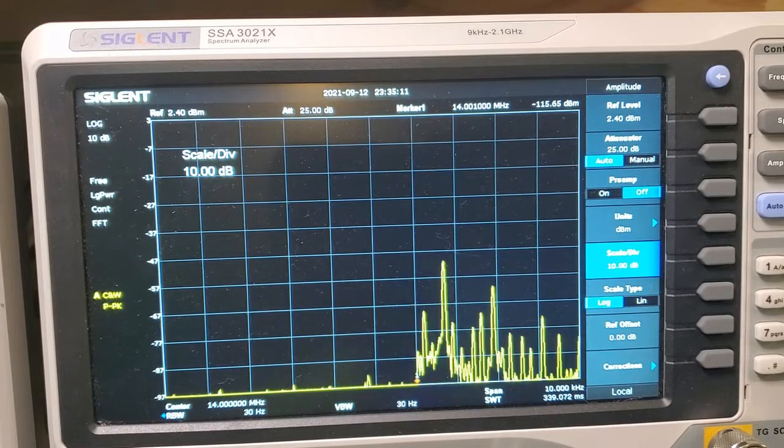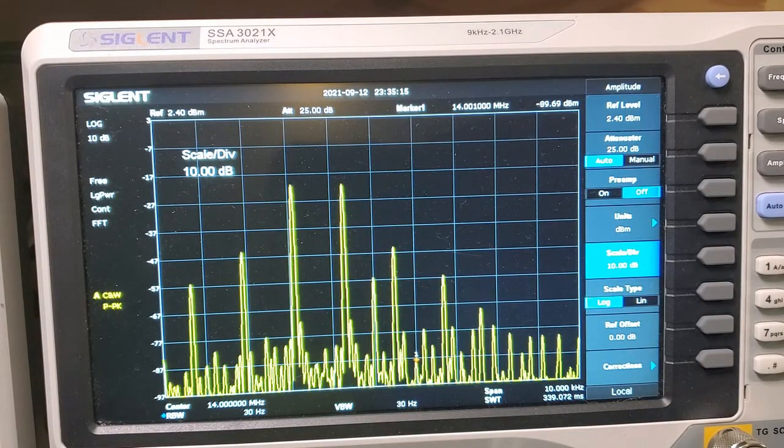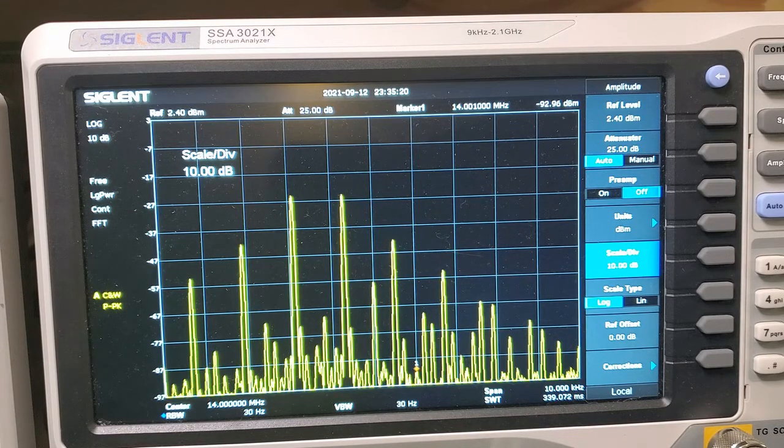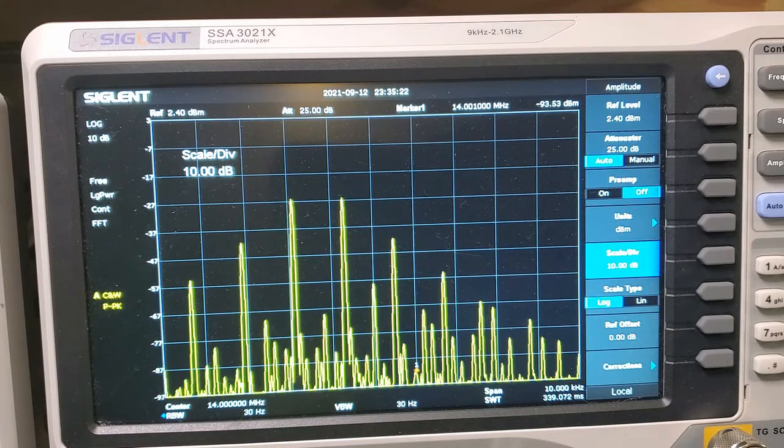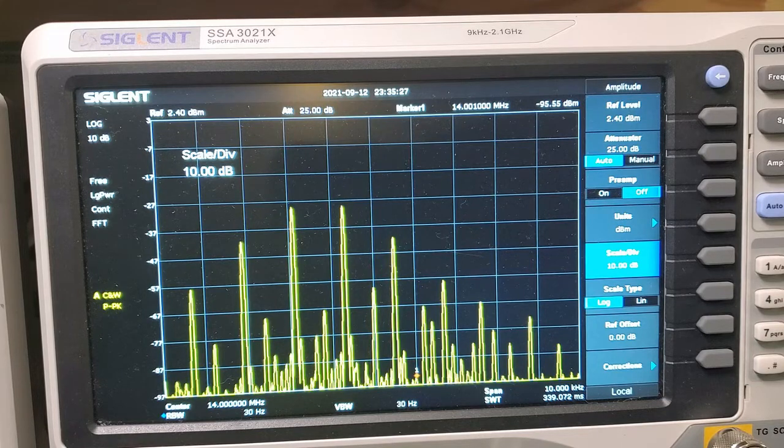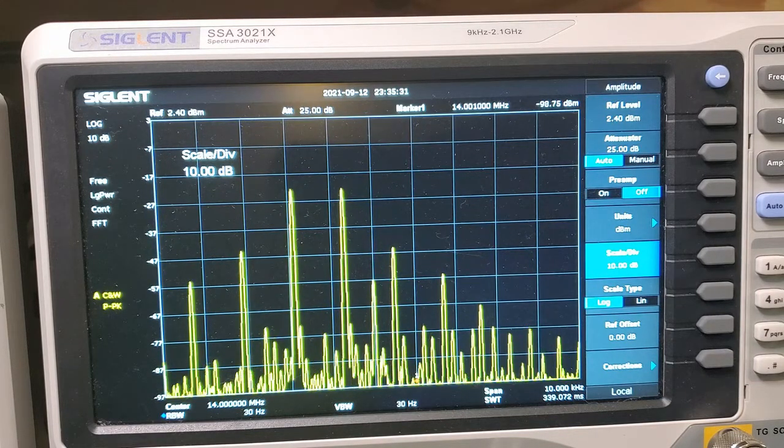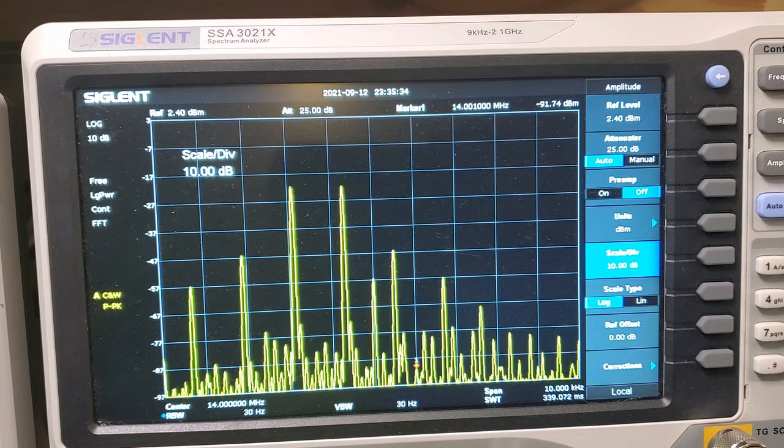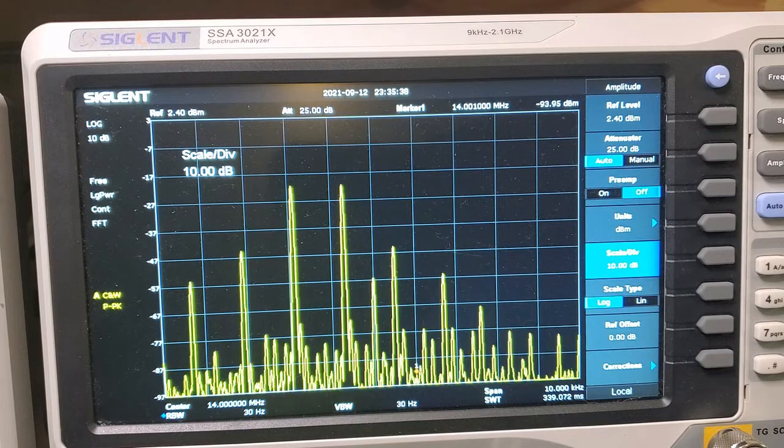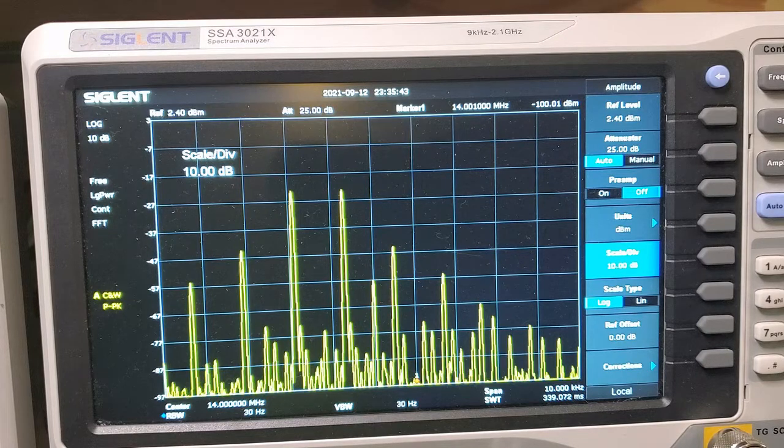So let's see the effect now of decreasing the gate bias on the spectrum analyzer. I'm slowly decreasing it now and you can see those two peaks are still there but the peaks on the left and right of that are increasing. In other words, that harmonic signal is stronger. So there's obviously a sweet spot there of gate bias voltage.